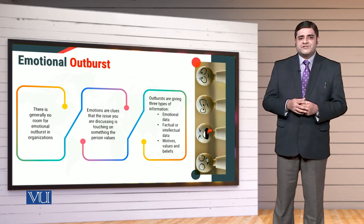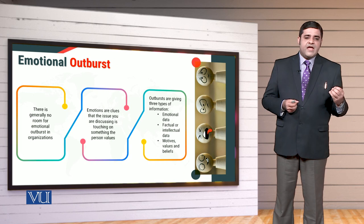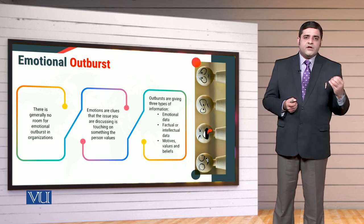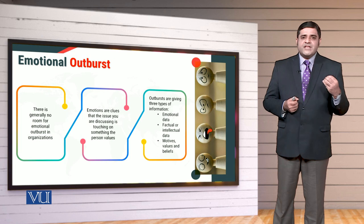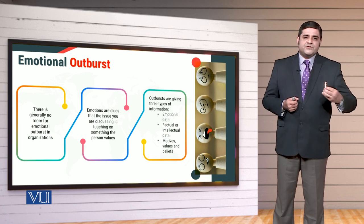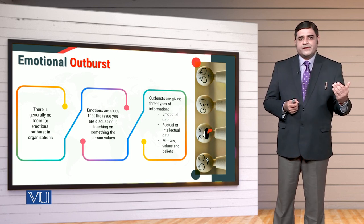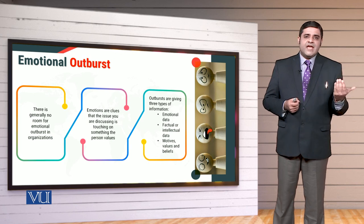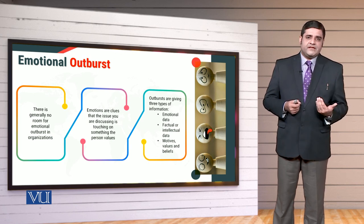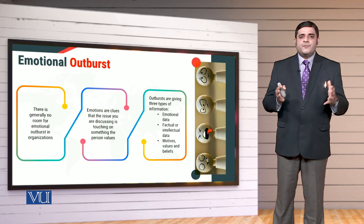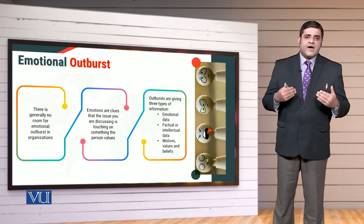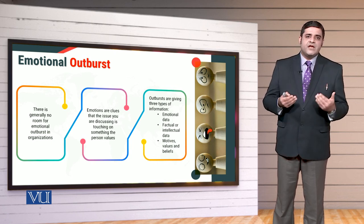Or in emotional outburst meh hem is baat ko dekhna pade ga ke har shaks ke paas koi na koi capability wo mojood hai. Lekin us capability ki demonstration meh baaz auqaat wo jazbaati bhi ho sakta hai. Lekin organizations humeh is baat ki ijazat nahi deti. Organizations is baat ka room hume provide nahi karti ke hem apne jazbaat ko ek had se zyada demonstrate kar sakein.